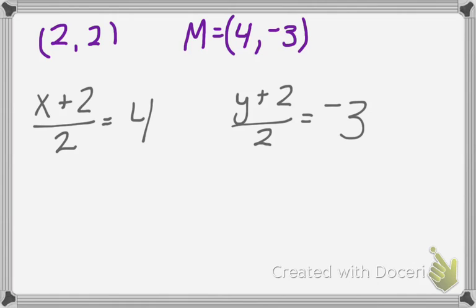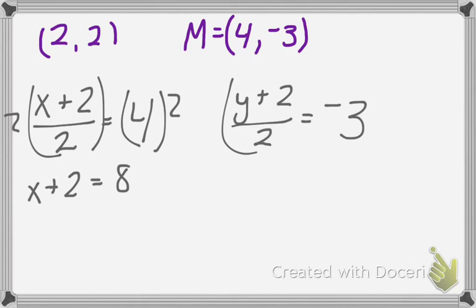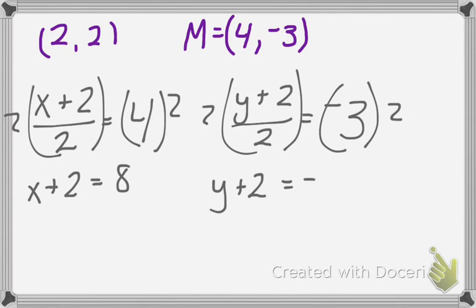Multiply everything by 2. We get that x plus 2 is equal to 8. So multiply this by 2, we get y plus 2 is equal to negative 6. So now with the way this point was given, we just subtract 2 from each side. So I get that x is equal to 6. Y is equal to negative 8.